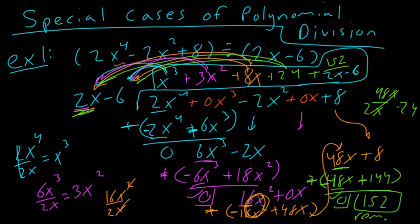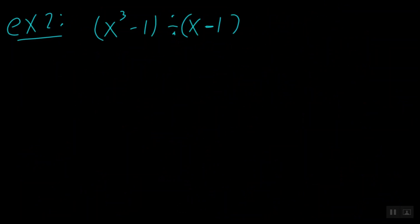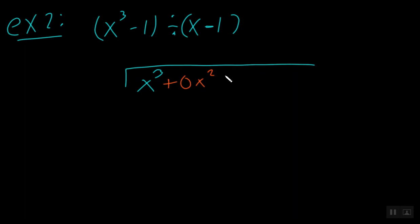Let's see example 2. We have x cubed minus 1 divided by x minus 1. How are we going to rewrite this? Well, I write x cubed — but wait, I notice I'm missing an x squared term, so I have to write plus 0x squared. And plus 0x, because I'm missing an x term too. Then minus 1, all divided by x minus 1. Remember, whenever you have any sort of missing degree, you're going to have to fill it in with zeros.